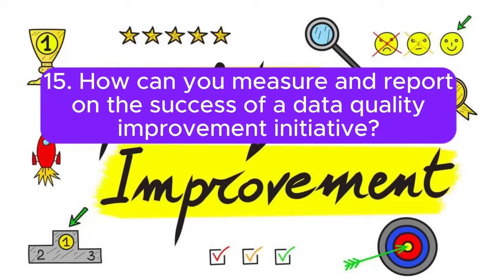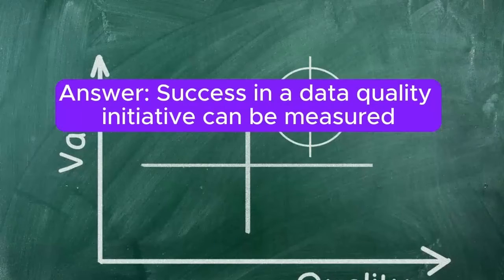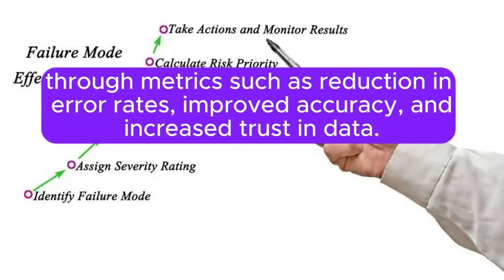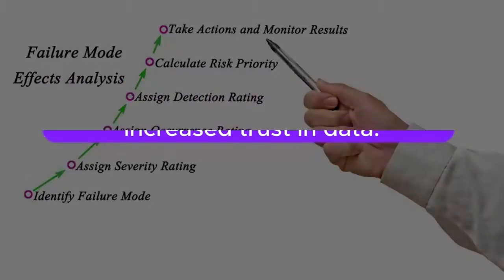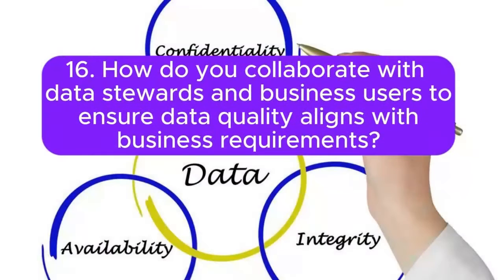15. How can you measure and report on the success of a data quality improvement initiative? Answer: Success in a data quality initiative can be measured through metrics such as reduction in error rates, improved accuracy, and increased trust in data. Reporting involves creating dashboards, trend analysis, and presenting before-and-after scenarios.